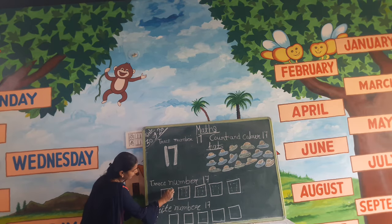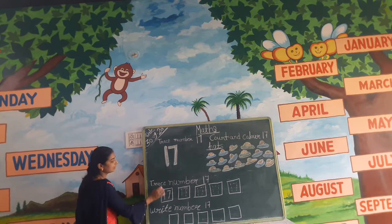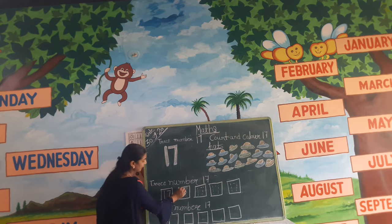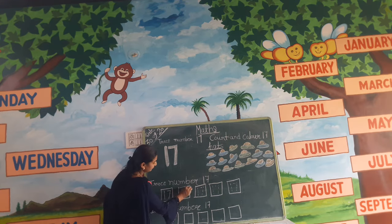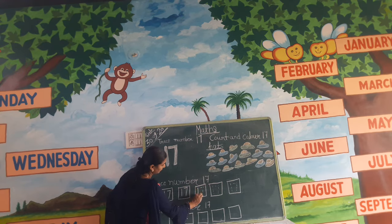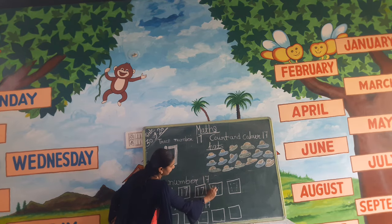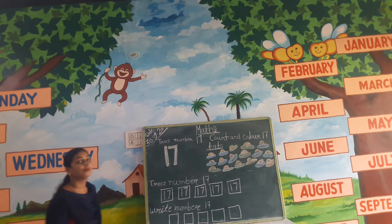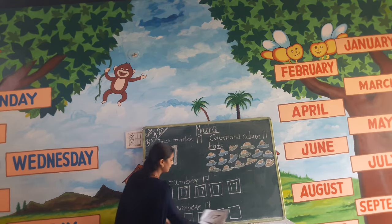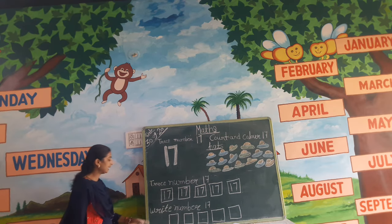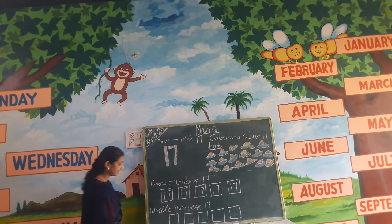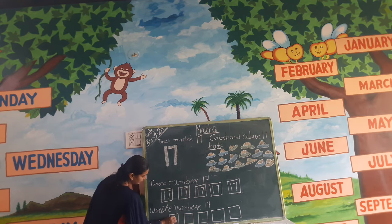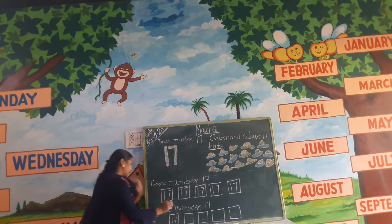One, seven — 17. Write number 17 in your workbook. Press number 17, then write number 17.